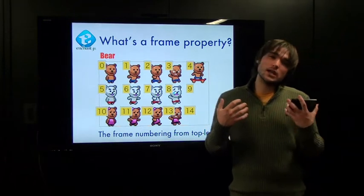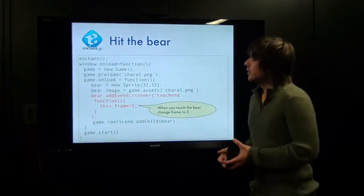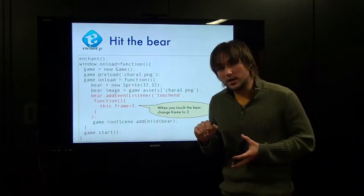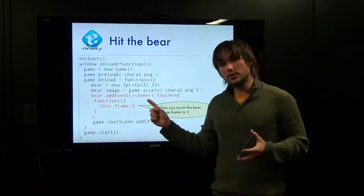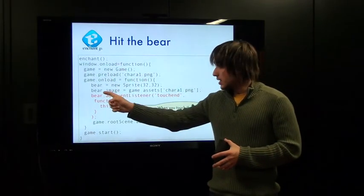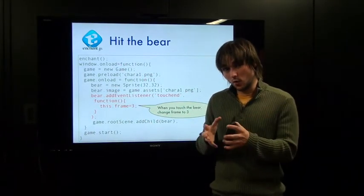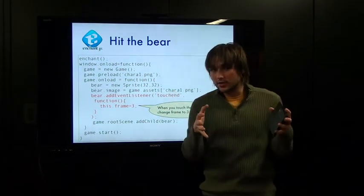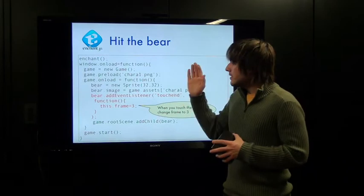So, how could you create an event listener that utilizes this? Well, let's look at some code. So, here we have a game, and we've preloaded our chara1.png, as you can see. Inside here, we're creating a new sprite, bear equals new sprite, 32 by 32, and those are the dimensions, like we said before. Then, since we've already preloaded it, we can bring in the image. We can say bear.image, we can designate which sprite sheet we want Enchant.js to use for this object, as game.assets, chara1.png. So, we've preloaded it into our bucket that Enchant.js uses, and then we use game.assets to access files in that bucket, you can say. And then we're adding an event listener.